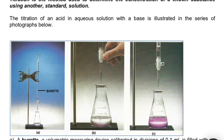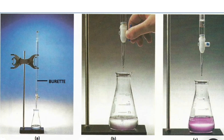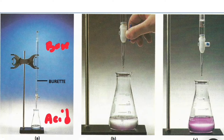The titration of an acid in co-solution with a base is illustrated in the series of photographs. Here in our beaker we have our acid, and here in our burette we have our base. We don't know the properties of this acid, but we know the properties of the base. So what we do is keep pouring a small amount of base into our acid — just a bit at a time.